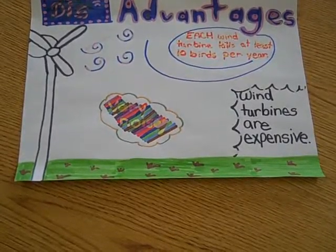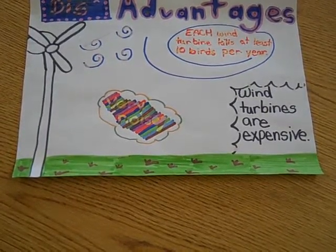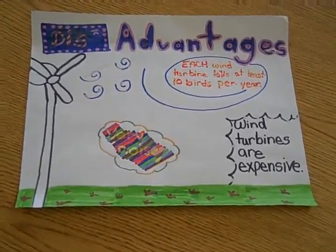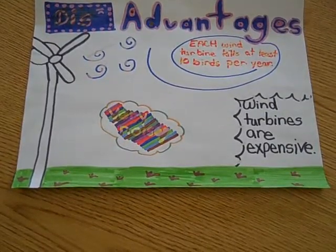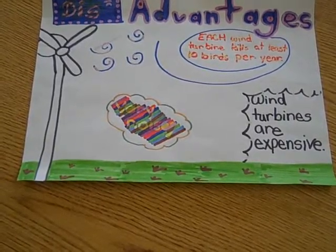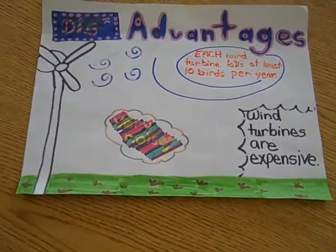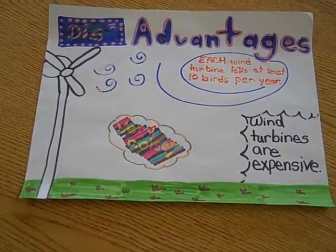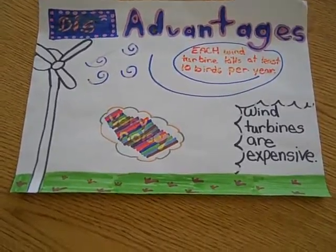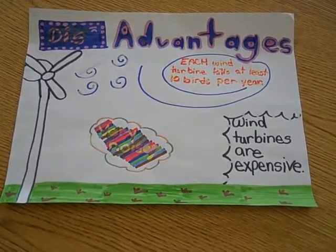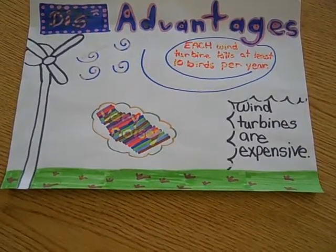There are more disadvantages — wind turbines are a threat to wildlife like birds who fly into them, or animals who used to live on the land the wind turbines are on now. Did you know that each wind turbine kills at least 10 birds per year? That last disadvantage is that people who live nearby the turbines complain that they are very noisy and ugly. Those are the disadvantages of wind energy.